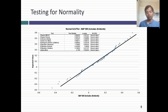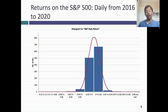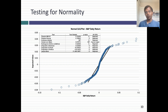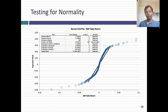Before you jump to the conclusion that stock returns overall, especially for an index, are normally distributed, be careful. If I take the S&P and look at daily returns rather than annual returns from 2016 to 2020, the distribution becomes much more peaked with a much smaller tail, and there's a greater chance you will reject the normal distribution. Daily returns on the S&P 500 are less likely to be normally distributed than annual returns. We're starting to accumulate some common sense rules: it's far more likely that an index follows a normal distribution than an individual stock, and far more likely that longer-term returns like annual returns follow a normal distribution than short-term daily or hourly returns.